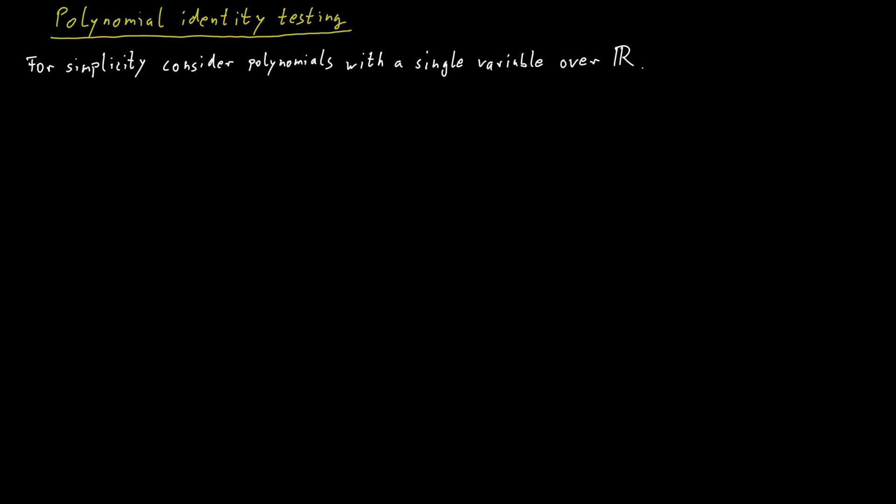So how would we find out whether a polynomial in a single variable over the reals is equal to 0 or not? So one idea is that we could just plug in some values for the variable and test whether that polynomial is equal to 0 in those places. And that's exactly what we're going to do.